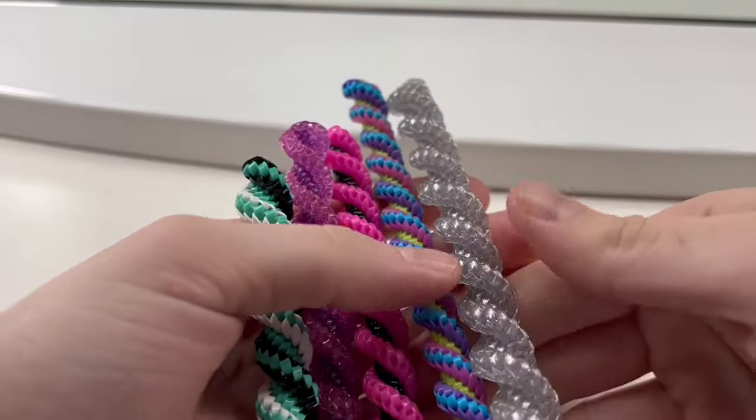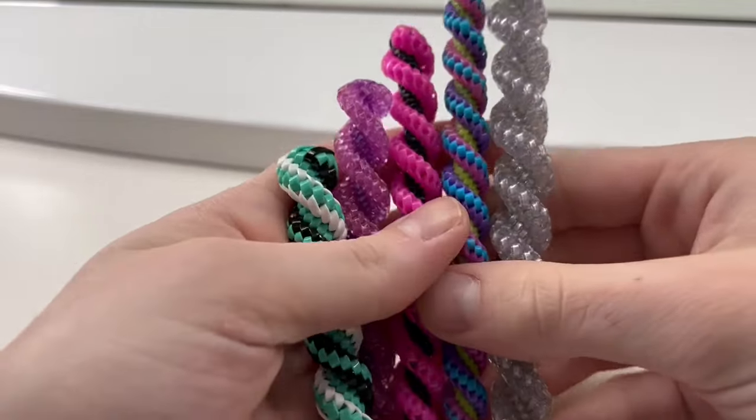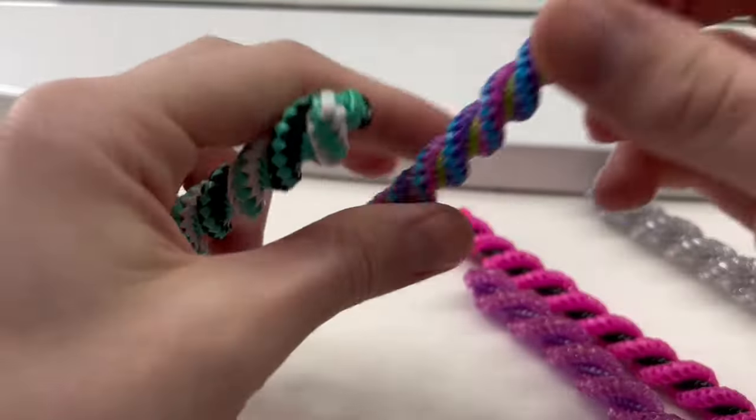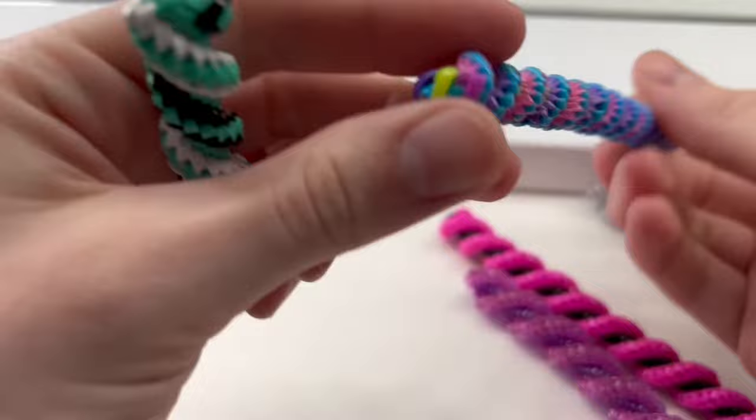Hey everyone, today I'm going to be showing you guys how to do the corkscrew stitch. This is a 3x1 twist. You can see at the bottom it's got three short strands and one long strand.